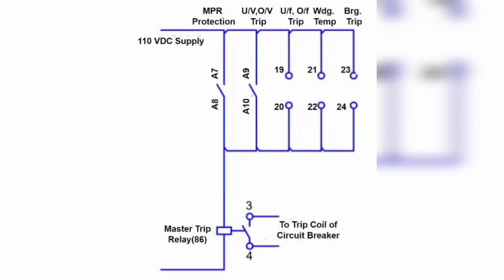Heavy Trip 86H: If the magnitude of the fault is very high, it may damage both electrical and mechanical equipment. The Heavy Trip Relay 86H output is wired with turbine tripping, grid breaker tripping, and generator breaker tripping. The Heavy Trip Relay, also called the Lockout Relay, issues a trip command to the grid breaker, generator breaker, and turbine. When the protection relays sense the following faults, the 86H relay outputs a trip command.